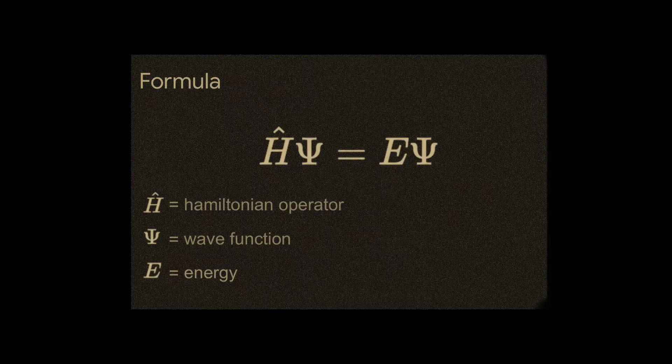The quantum mechanical model is an atomic model derived from the Schrödinger wave equation. This model predicts what the electron cloud looks like, its interaction with other electrons, and where they can be found, with the help of complex equations and computer software.